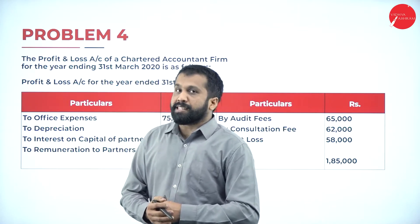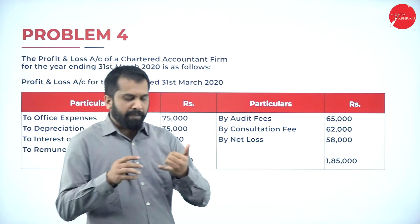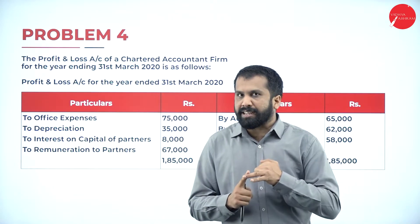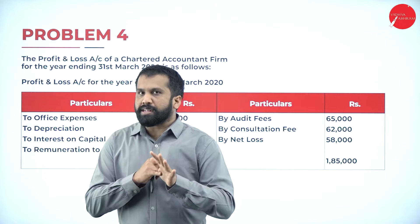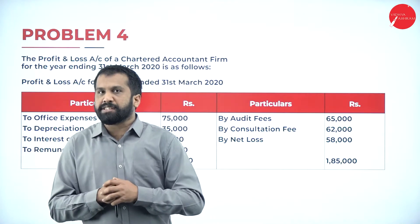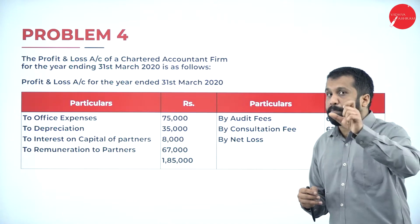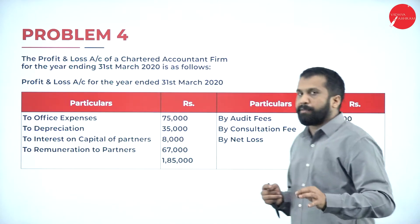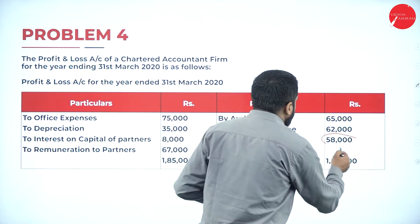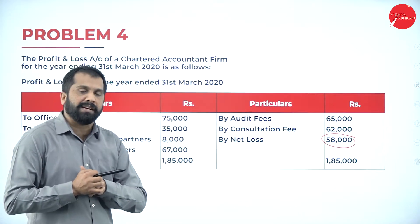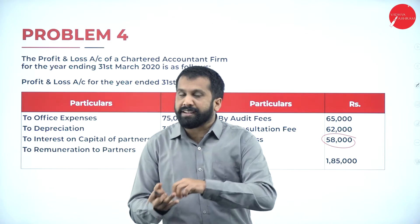Remember in business we used to add inadmissible expenses — those like anything paid to director, manager's salary, depreciation, any provisions, any taxes like luxury tax, these kind of expenses we used to add. Similarly, now we are supposed to take net profit at the beginning, but in this problem do you have net profit? No. What do we have? We have net loss. Now start from net loss — for net loss you are supposed to add inadmissible expenses which are not directly related to business.